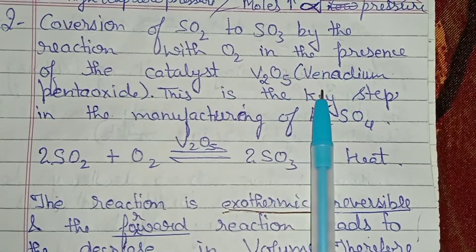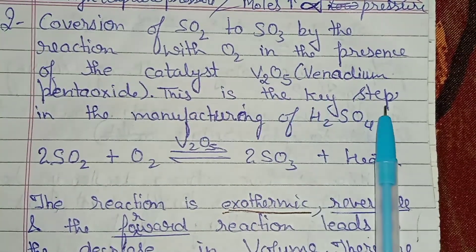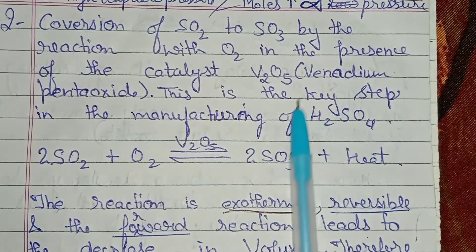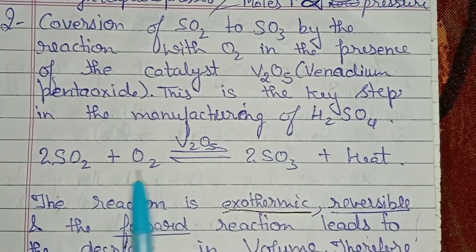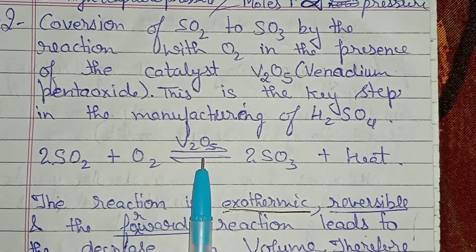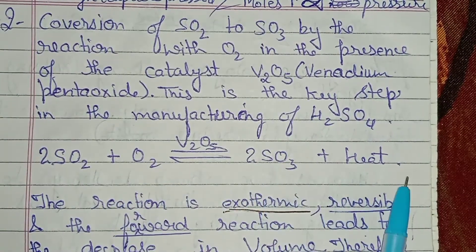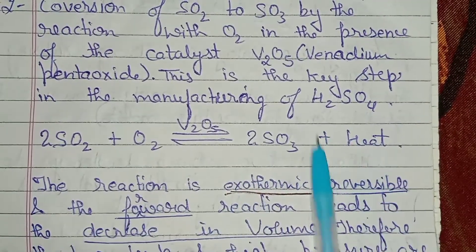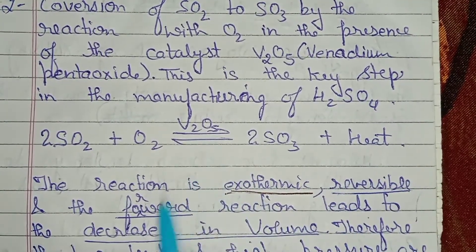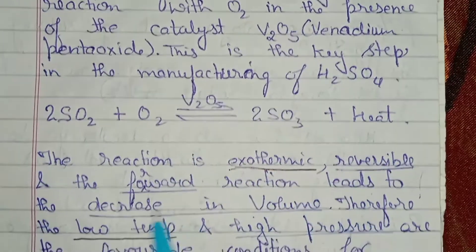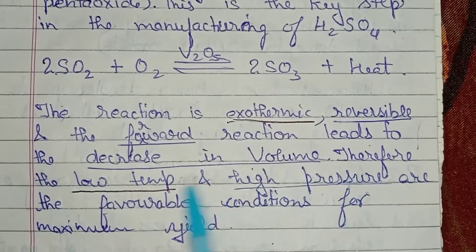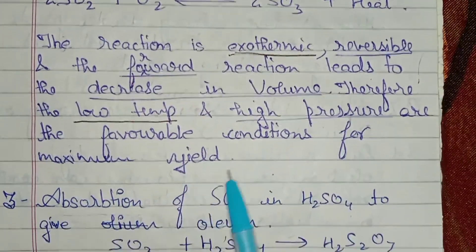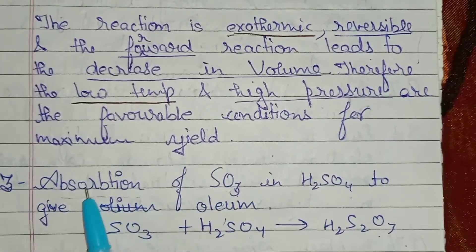The next step is the conversion of SO₂ to SO₃ by reaction with O₂ in the presence of the catalyst V₂O₅. This is the key step in the manufacturing of H₂SO₄: SO₂ + O₂ → SO₃ + heat. The reaction is exothermic and reversible; the forward reaction leads to a decrease in volume, therefore low temperature and high pressure are the favorable conditions for maximum yield.